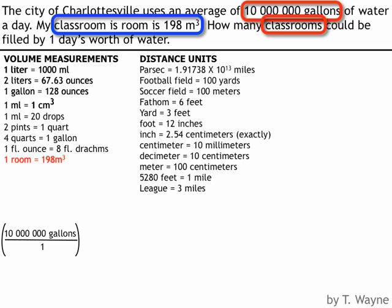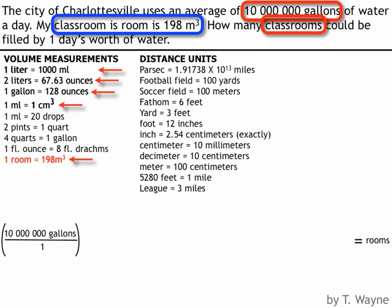I'll write 10 million gallons of water over one. I'm going to convert it, eventually on the far right, over to rooms. So I'm going to start with gallons to ounces, ounces to liters — two liters in this case — then liters to milliliters, milliliters to cubic centimeters. And somehow I've got to get cubic centimeters converted over into cubic meters. That's the missing conversion factor, and I'm going to use exponents to make it work.